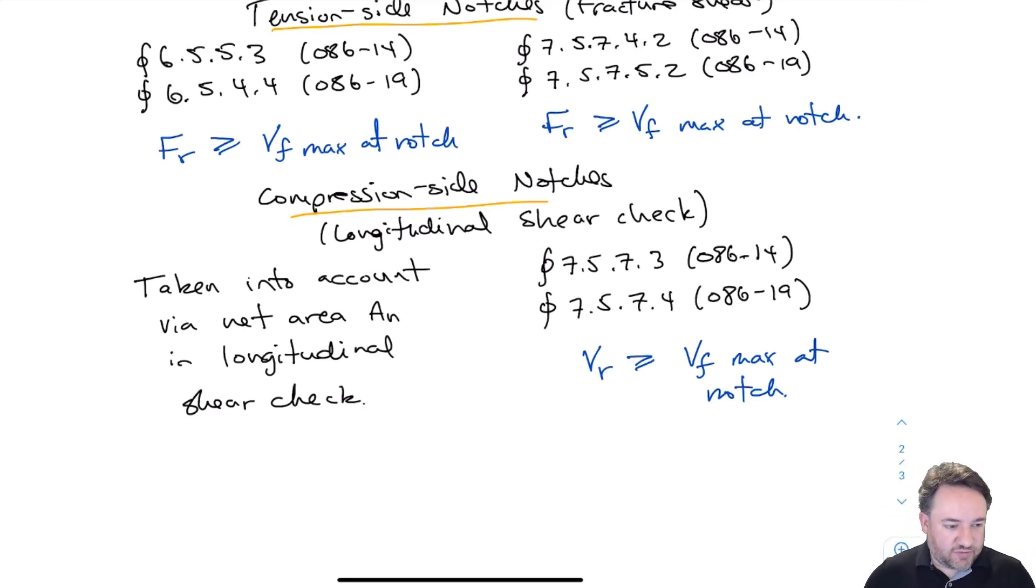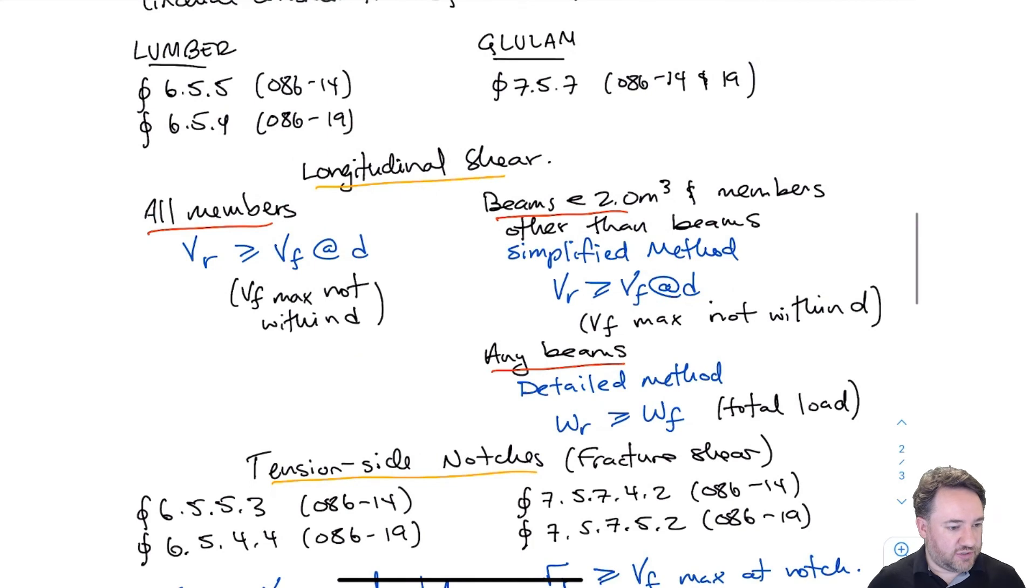So that's the approach for shear. Those are all the different things that we can check for shear. If I don't have notches, then I don't have to check these notch equations, obviously. And I'm left only with the longitudinal shear checks.